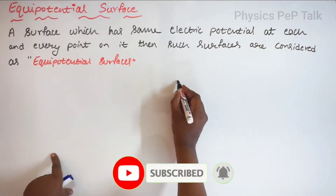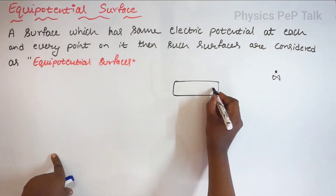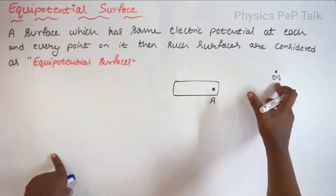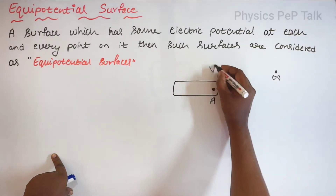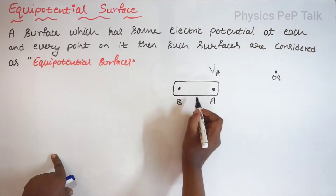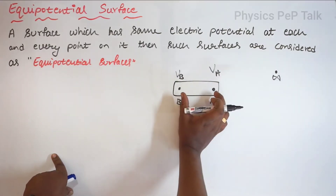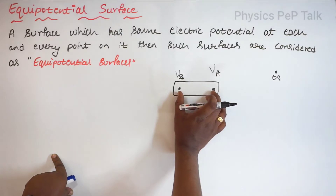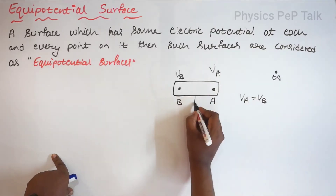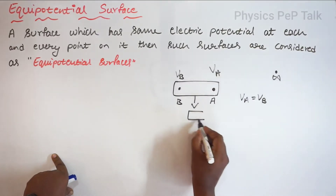I will consider a surface. If I bring a charge from infinite distance to this point, I will call this point A. So if I do some work in bringing a charge from infinite to point A, I will get the electric potential at point A. If I bring this charge from infinite to another point B, which is on the same surface, I will get the electric potential at point B. What if the electric potential at point A is equal to electric potential at point B? That is, V of A is equal to V of B. Then this surface is considered as an equipotential surface.